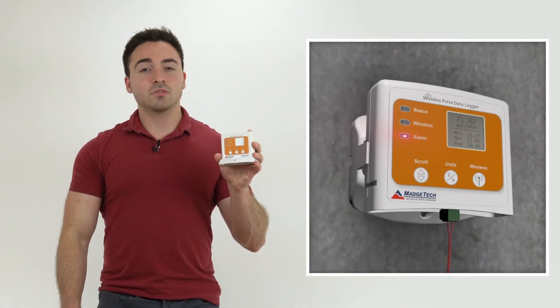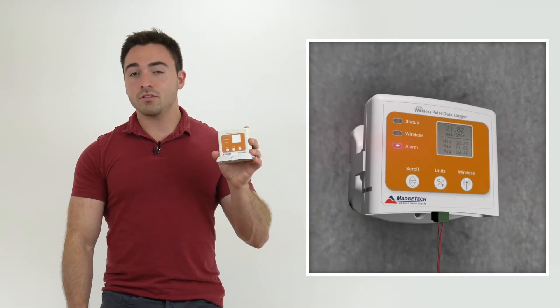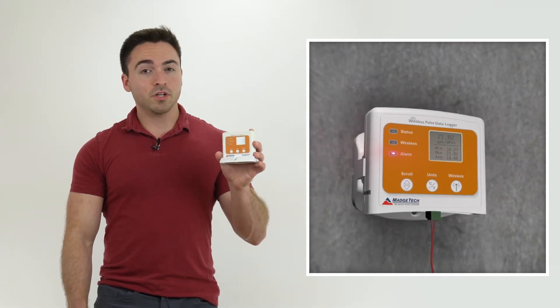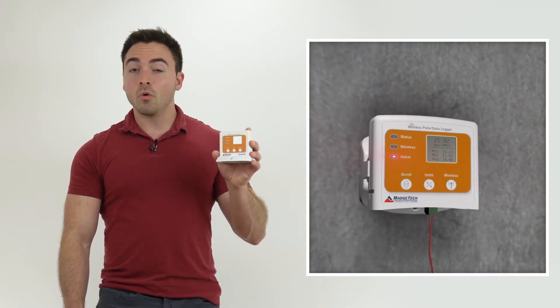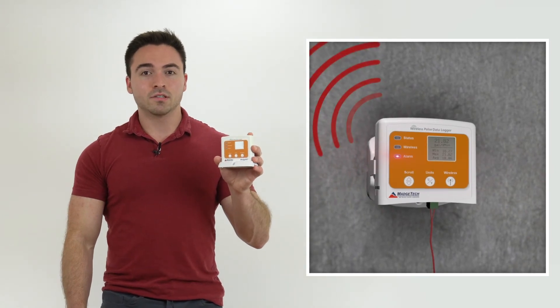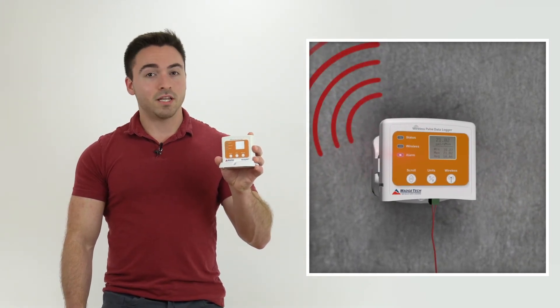The RF Pulse 2000A allows users to program custom high and low threshold alarms, which when breached can sound an audible alarm or send text or email alerts, allowing users to respond immediately.